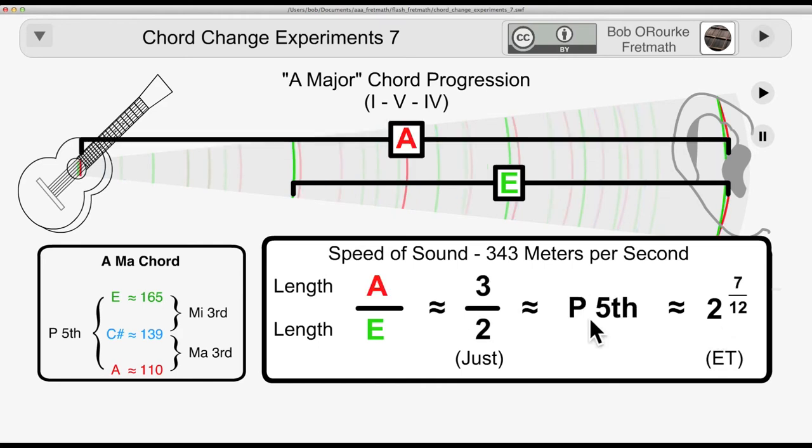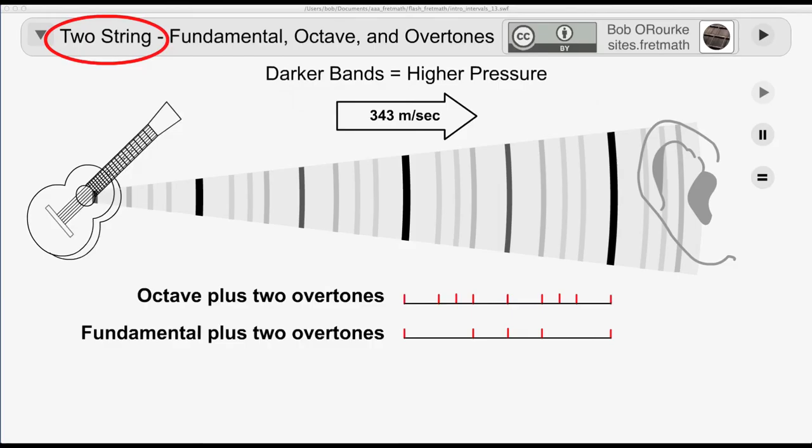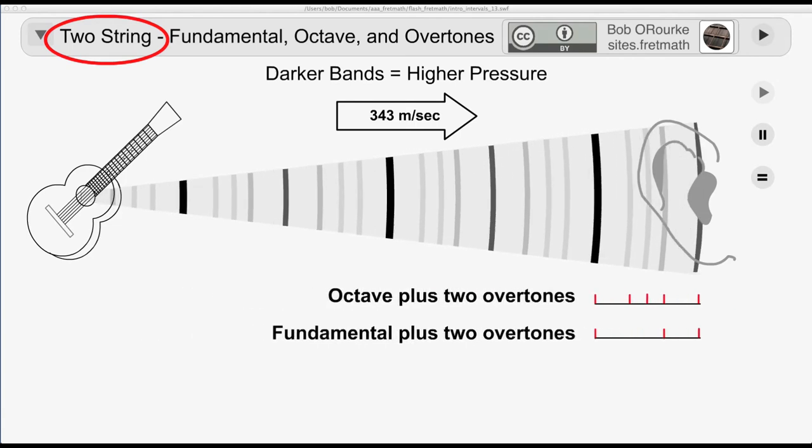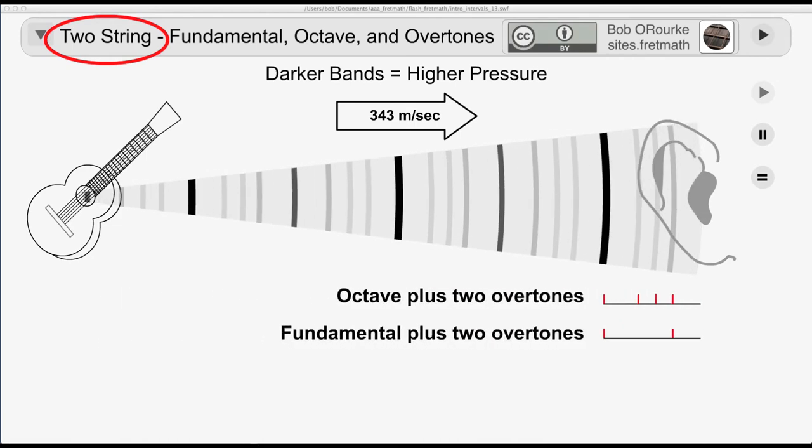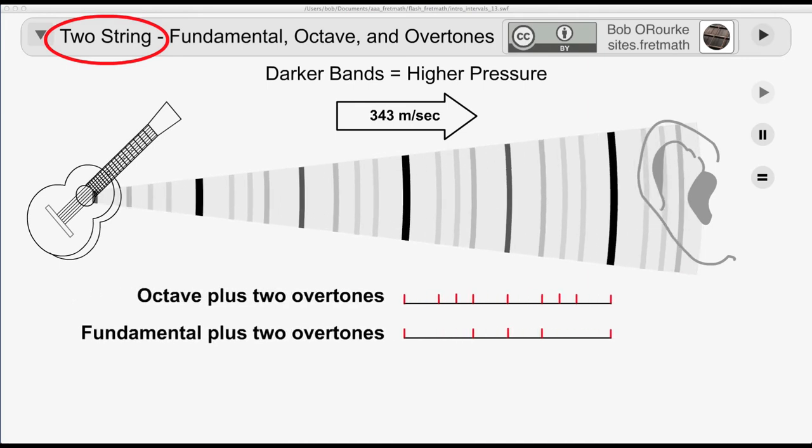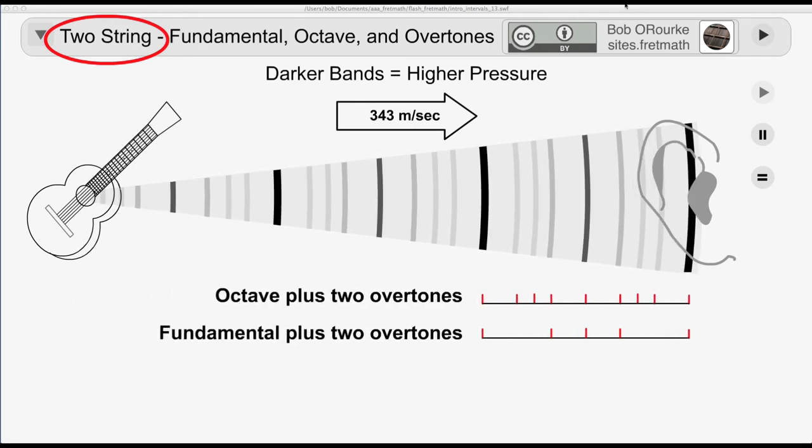And here's the perfect fifth interval, 3 to 2 for just intonation, and 2 to the 7/12ths for equal temperament. And I think I said before, the actual motion of the individual air particles is complicated, and so far has not even been observed in detail. When I addressed some of the difficulties in the two sound and air videos, a large part of the audience disappeared.